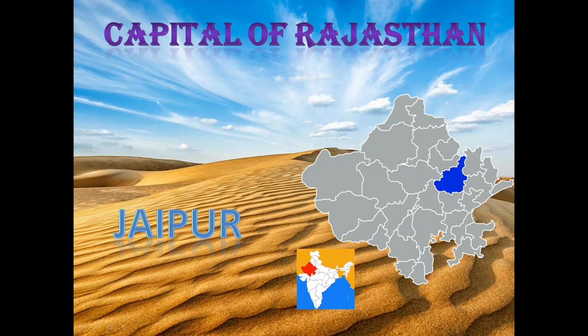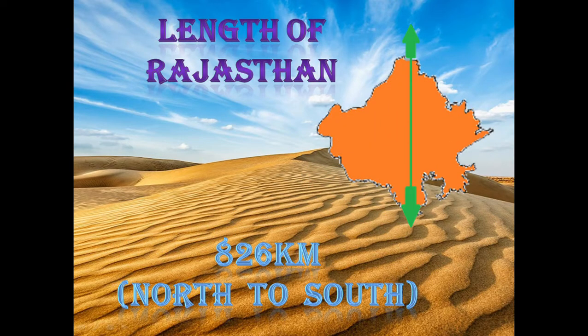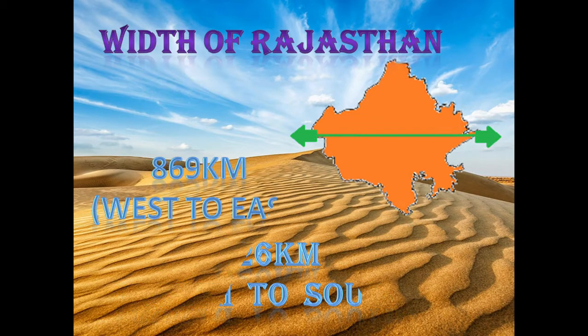The capital of Rajasthan is Jaipur. The length of Rajasthan from north to south is 826 kilometers, and the width from west to east is 869 kilometers.